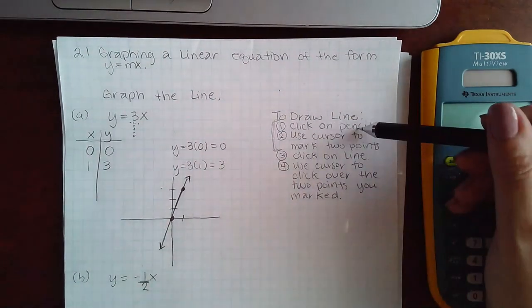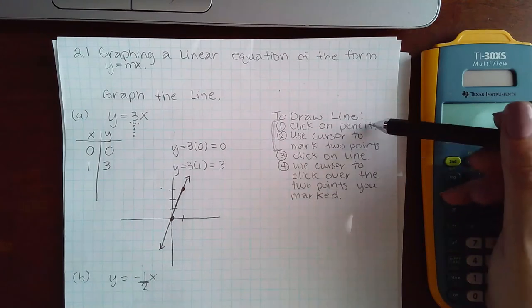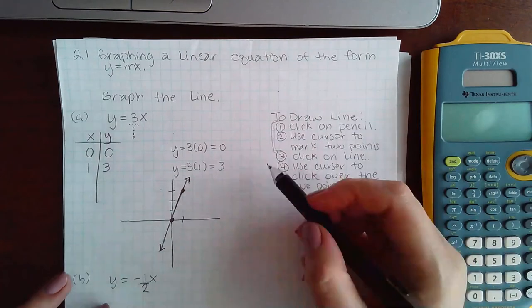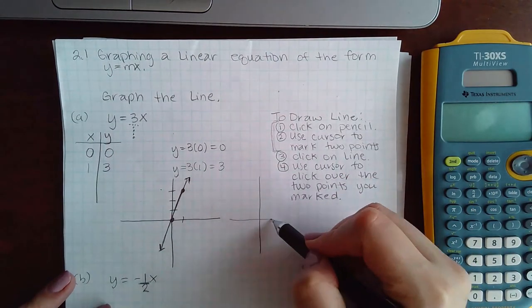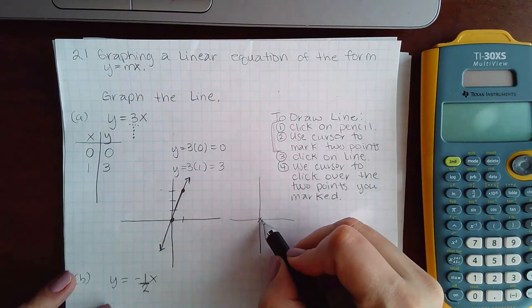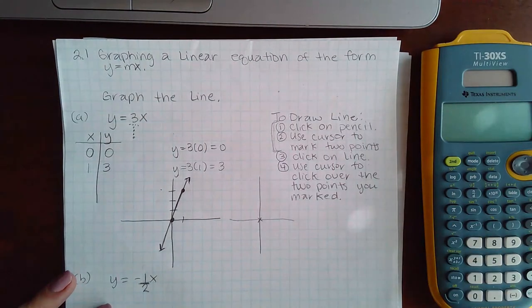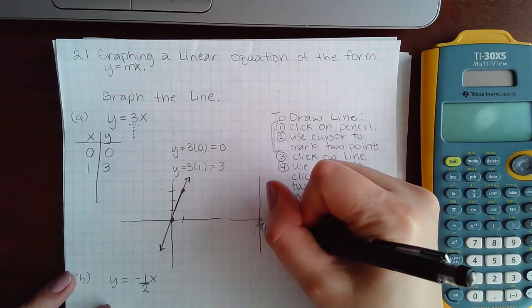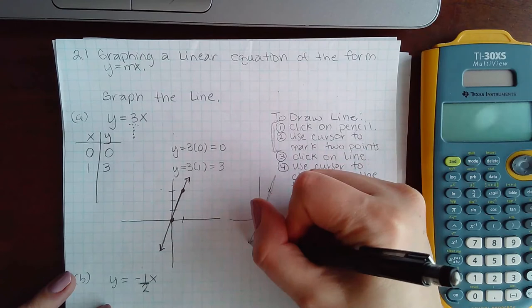However, you could skip this part. You don't have to draw all the points in there. What you could do is click on the line icon, and when you click on it and you go to zero zero, what it's going to do is it's going to put a little x at zero zero. And then you go over to one and three, and it's going to put an x, and then it's going to automatically draw the line at the same time.